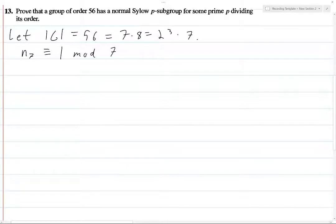So N₇, the number of Sylow 7 subgroups, is 1 mod 7 and N₇ divides its index, which is you just take the order of the group and cancel out the 7 and take everything that's left. So that's 2 cubed, which is 8. So let's see here. What are the options for 1 mod 7? We have 1, we have 8.